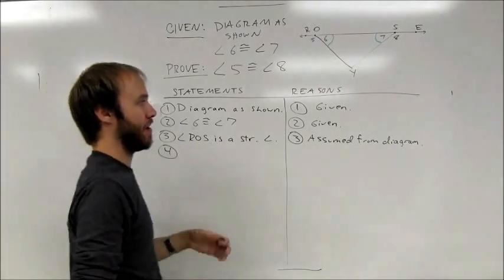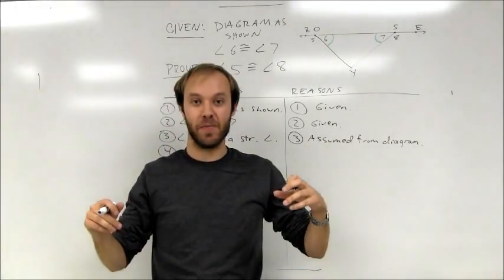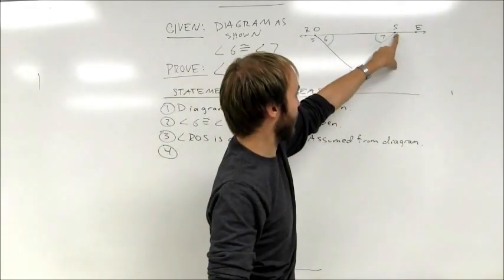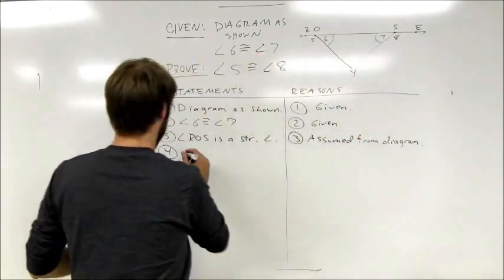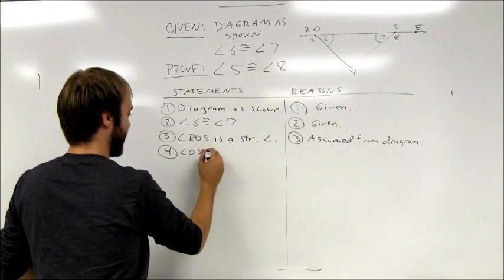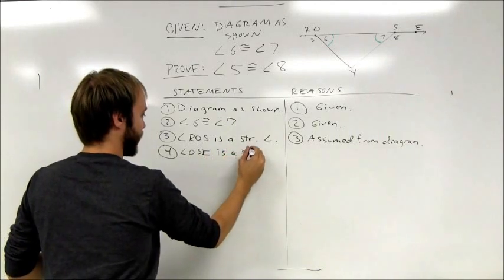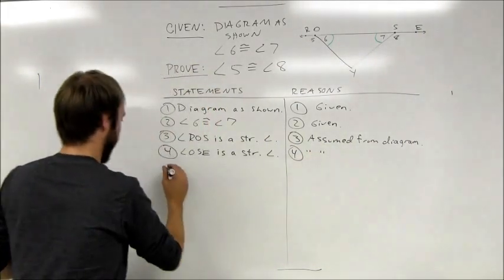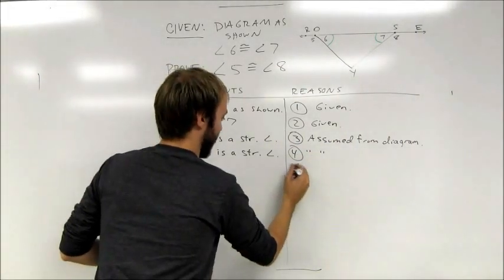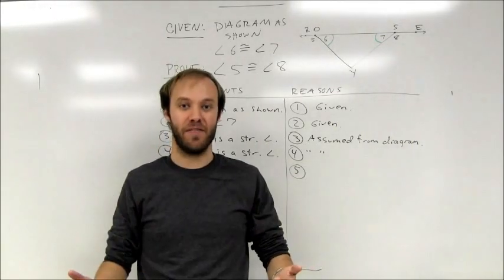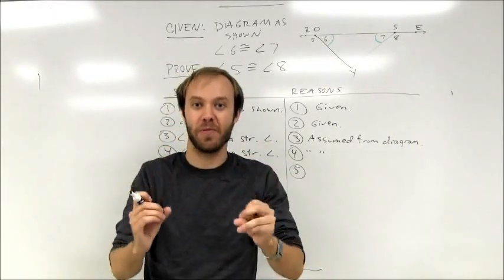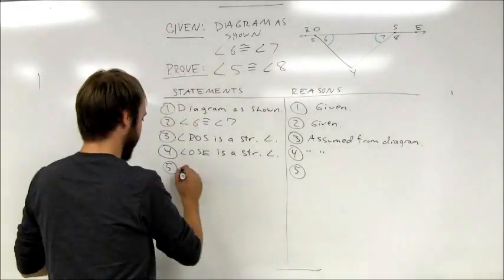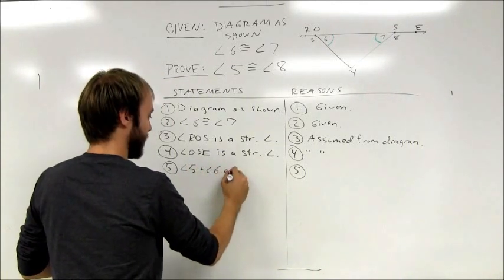I also need a second pair of straight angles. If I'm going to talk about supplements of congruent angles, I need double pairs of supplementary angles. So I need a second straight angle at vertex S — that's OSE. So angle OSE is a straight angle, and the reason is the same, so I'll just put quotes. Step five: I need to state that I have angles that are supplementary. If I'm going to talk about having supplements, I have to have shown supplements earlier in my proof. So angle 5 and angle 6 are supplementary.